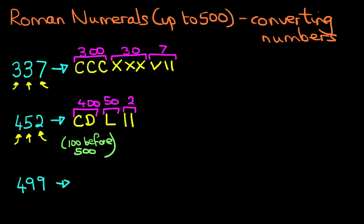How do we write 499? I want you to help me with this. 499. Where do we start? We start on the left hand side. 400. How do we do 400? Well, we did it up here. It is C, D. So that is 400.